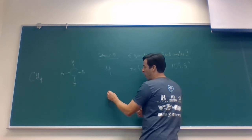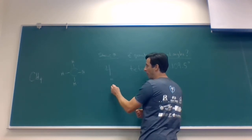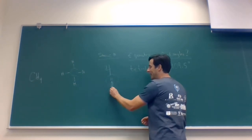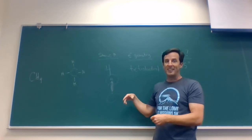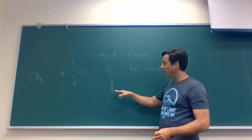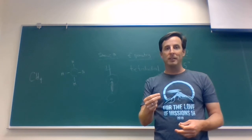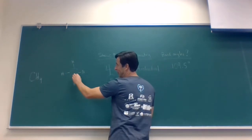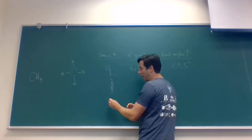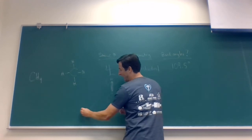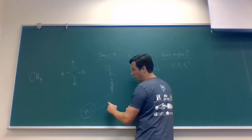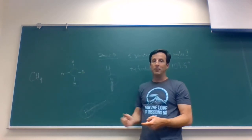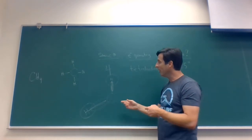That raises a question: what orbitals does carbon have that allow bond angles of 109.5 degrees? In CH4, carbon puts one electron in an orbital and extends it toward hydrogen; hydrogen puts one electron in its orbital and extends it toward carbon. When they overlap, both electrons move between those atoms — that's our bond. It's a single bond formed by the direct overlap of orbitals between carbon and hydrogen, and we specifically call that a sigma bond.